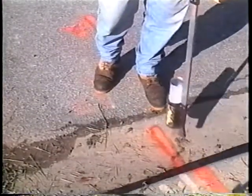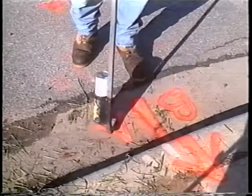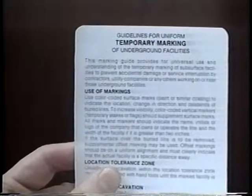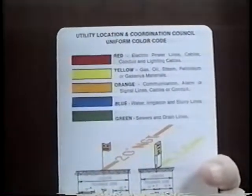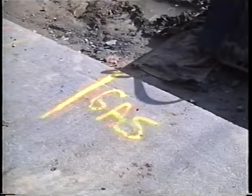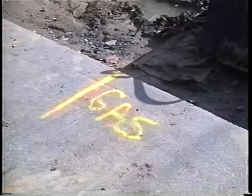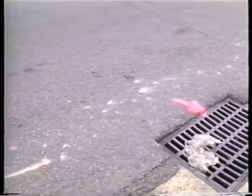A uniform color code has been developed by the Utility Location and Coordination Council of the American Public Works Association to mark various categories of utilities. This pocket card from APWA contains guidelines for uniform temporary marking of underground facilities, including the uniform color code. Red for electric power lines, cables, conduit, and lighting cables. Yellow for gas, oil, steam, petroleum, or gaseous materials. Orange for communication, alarm, or signal lines, cables, or conduit. Blue for water, irrigation, and slurry lines. And green for sewers and drain lines. Where several facilities lie close together, using the color code makes markings distinguishable and understandable to all.